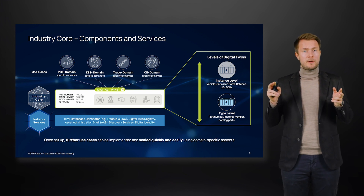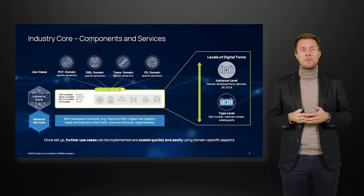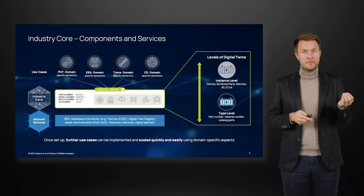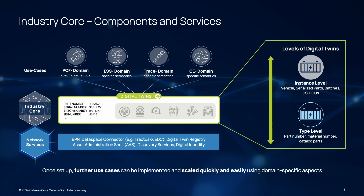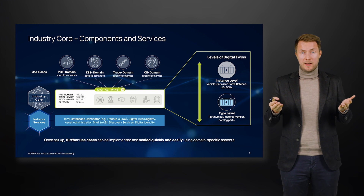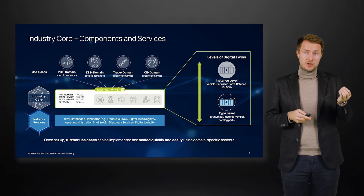It is the lowest common denominator of all of our use cases. Once those twins are built, it becomes very easy to attach further domain-specific semantics, like a PCF value, end-of-life data, certificates or product paths. The reusability of these central components ensures a lower entry barrier for new use cases and a high scalability for our network, independent of the use case, since all use cases are built on the same infrastructure. All use cases benefit from each other in making our mission of an end-to-end data chain possible.